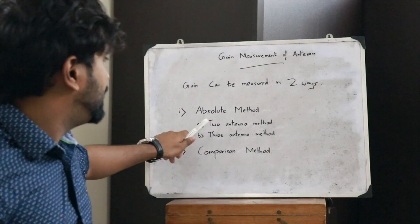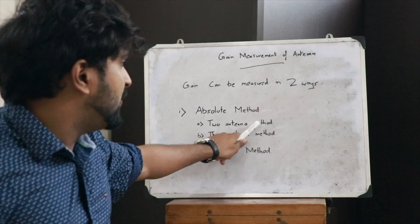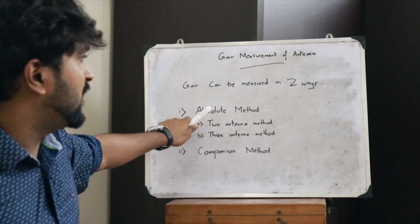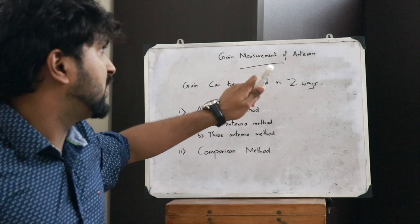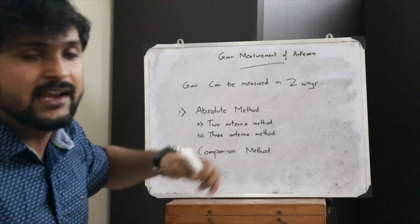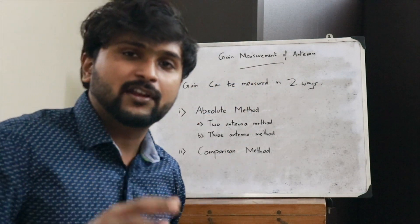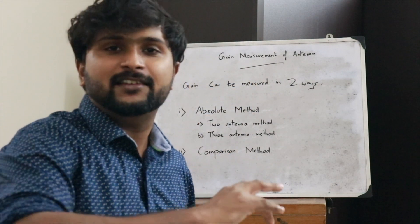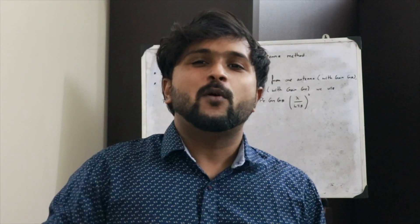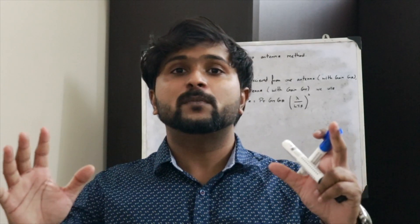So now let us look into the two-antenna method, which comes under the absolute method for the calculation of gain of a particular antenna. In the first method we have the two-antenna method which comes under the absolute measurement method for calculating the gain of a particular antenna.